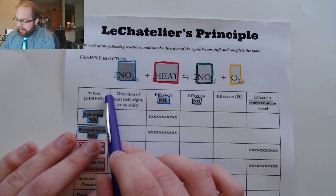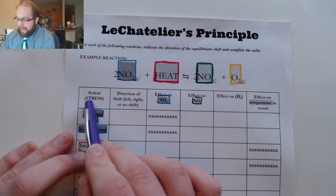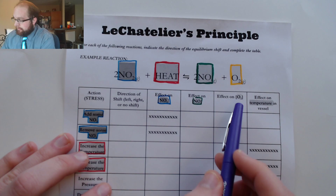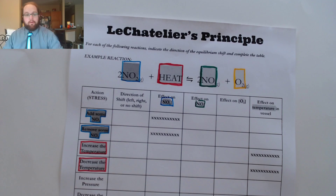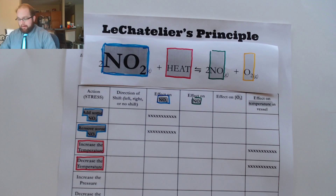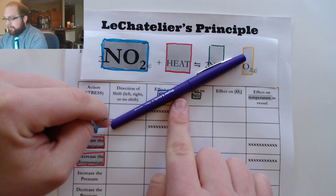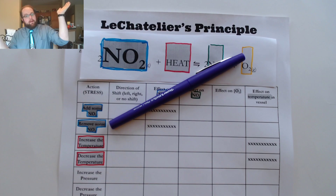My goal is to identify the direction of a shift of this equilibrium — either left, right, or no shift — based on the stress or action that is taken. So if I add some NO2, I want to see how that affects my relationship. What's happening is we've now added a bunch of NO2 to the left side of my equation. I think of this like a seesaw: it was nicely balanced, but now that balance has shifted because we added a bunch of stuff to the left-hand side.